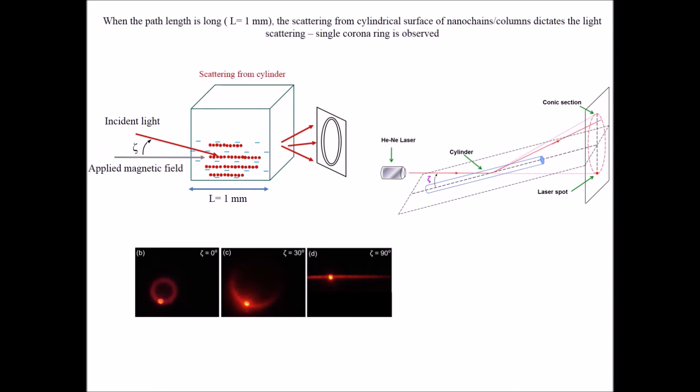Dependence of the shape of scattered single conic ring on the angle between incident light and the applied field direction confirms the scattering from cylindrical surface of chains and columns.